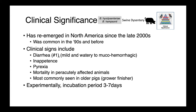Clinical signs associated with swine dysentery include diarrhea, which can vary in character from quite mild and watery to mucohemorrhagic with even fibrinous casts of the colon. Pigs are inappetent, they may be pyrexic, and we can see mortality in peracutely affected animals — although anecdotally this is less common now with the strains that are currently circulating.